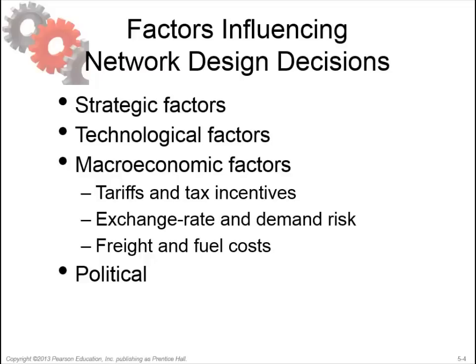The second macroeconomic factor is exchange rate and demand risk. Fluctuations in exchange rates are common and have a significant impact on profits in any supply chain serving local markets. Exchange rates may be handled with financial instruments that limit or hedge against losses due to fluctuations. Supply chain networks can be suitably designed to take advantage of exchange rate fluctuations and increase profits. An effective way to do this is to build overcapacity into your network and make the capacity flexible so that it can be used to supply different markets.